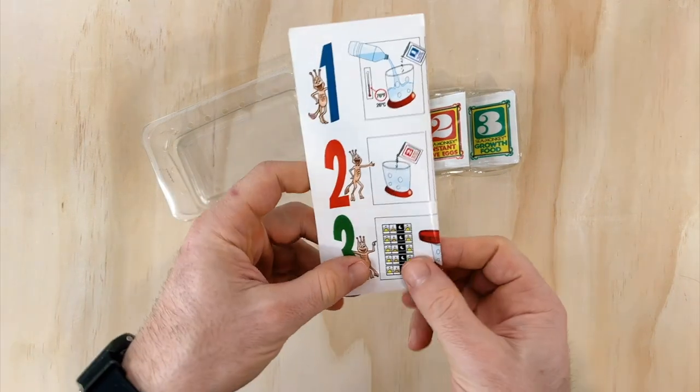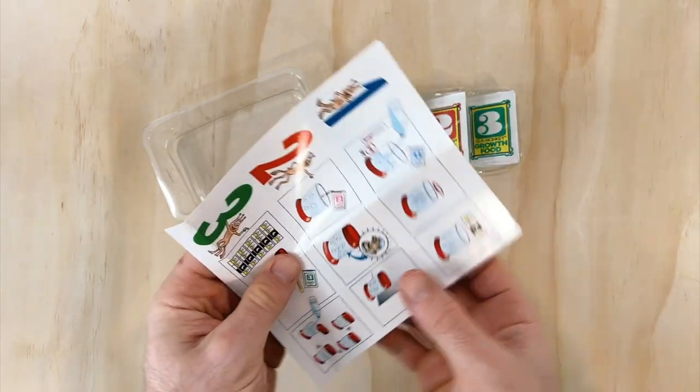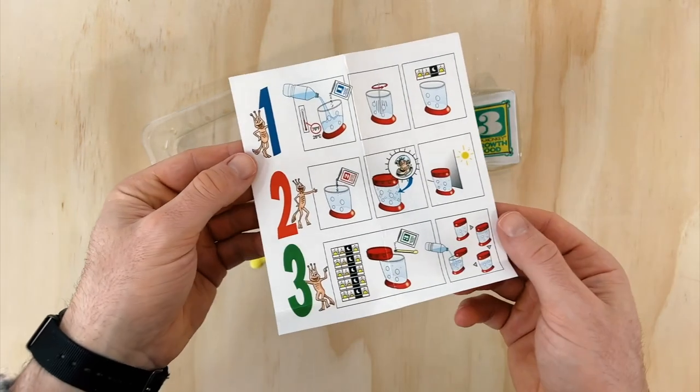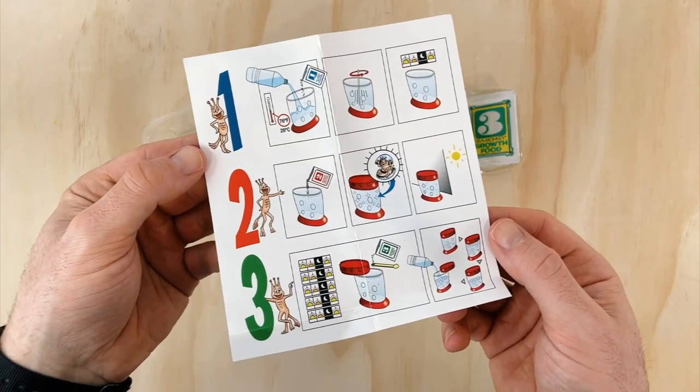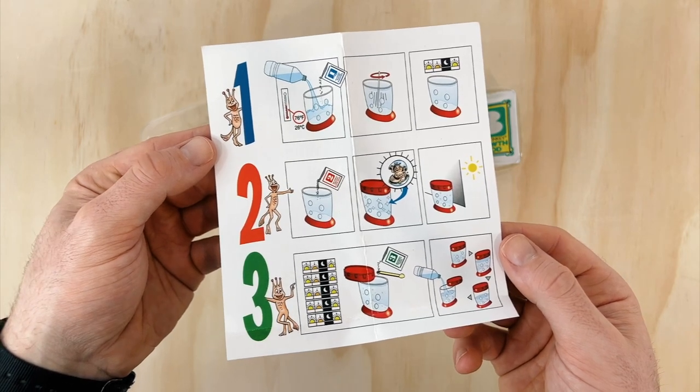There's a simple set of instructions in here, but just the generic ones that give you an outline of how to start your sea monkeys using the three packets. Todd Machen, who's currently doing the official illustrations for Transcience, has recently done an updated version of this, which you'll start seeing in the newer sea monkey kits soon.